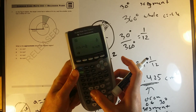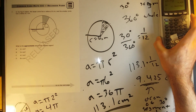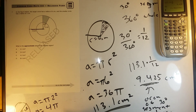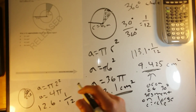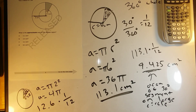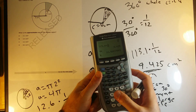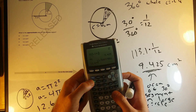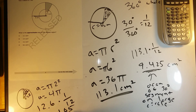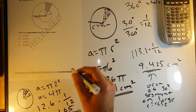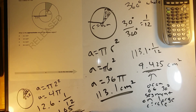4 pi is about 12.57, so we want to find 1/12 of it. So 12.6 times 1/12 gives us 1.05. So 1.05 is the area of that little 30 degree segment of the small circle.